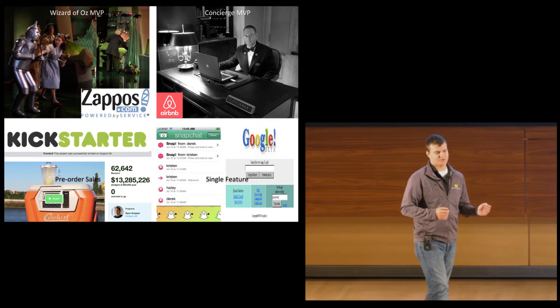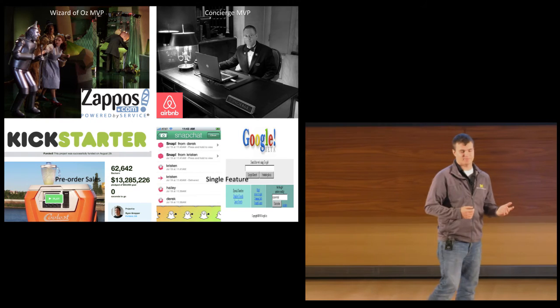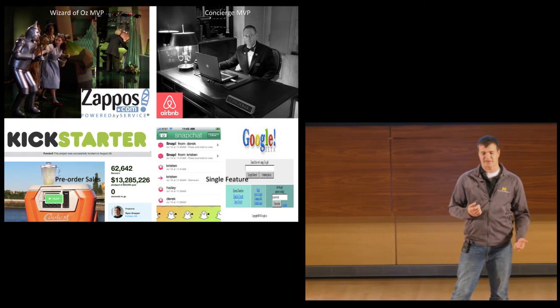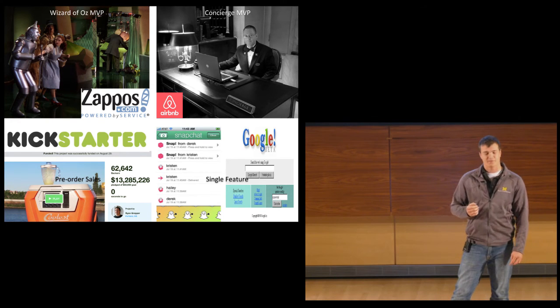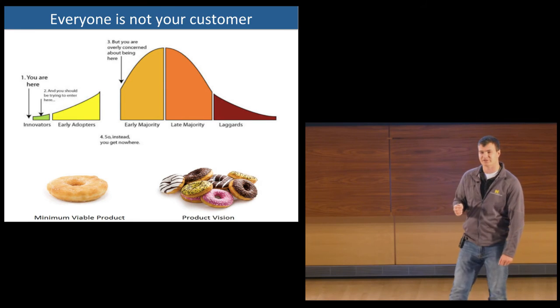Now, there are a lot of ways to do this, including the Wizard of Oz MVP, the Concierge MVP, pre-order sales, and just simply starting with a single high-value feature. Many multi-billion-dollar companies have started by doing things that don't scale this way.